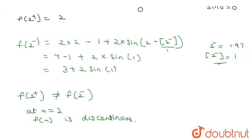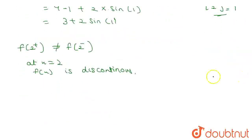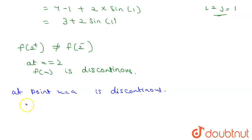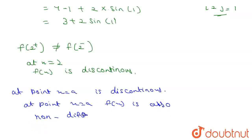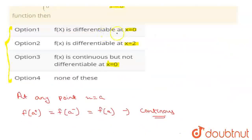We know the theorem that if a point is discontinuous — if at point x equal to a the function is discontinuous — then f(x) is also non-differentiable at that point. So f(x) is differentiable at x equal to 0 is false, and f(x) is differentiable at x equal to 2 is also false. Therefore option number 4 is correct.